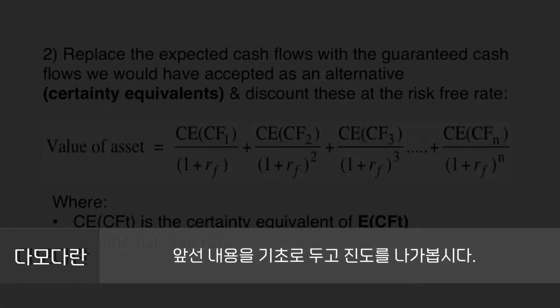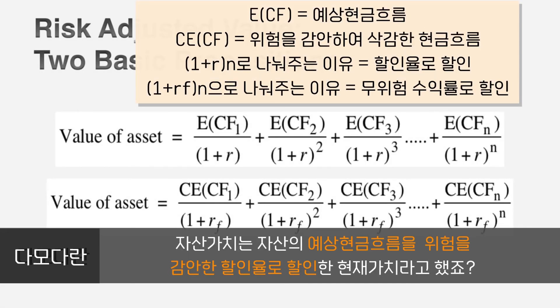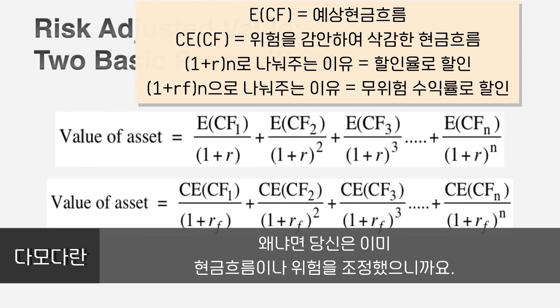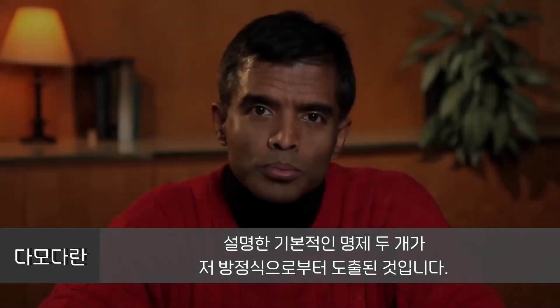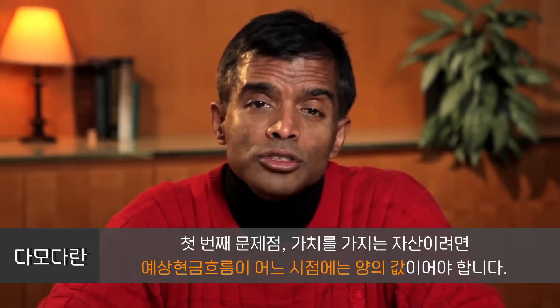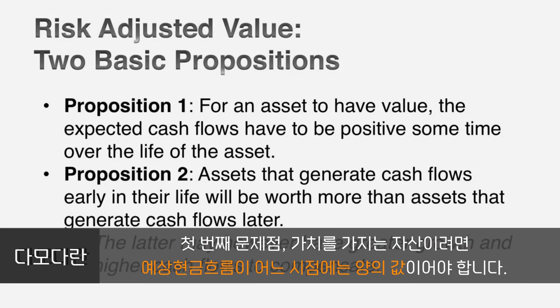Having laid that as a basis, let's extend it. The value of an asset is the present value of the expected cash flows discounted back at a risk-adjusted discount rate. Or, the value of an asset is the certainty equivalent cash flow discounted back at a risk-free rate, because you've already adjusted the cash flows for risk. Two basic propositions flow directly from that equation. Here's the first one: for an asset to have value, its expected cash flows have to be positive at some point in time.